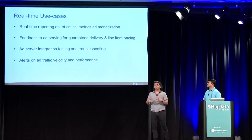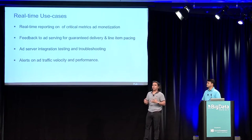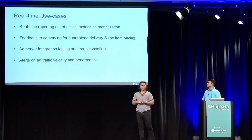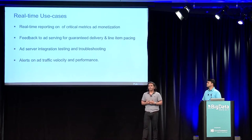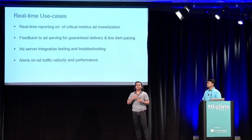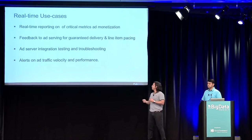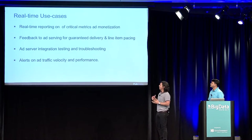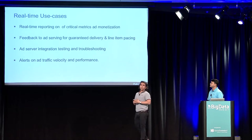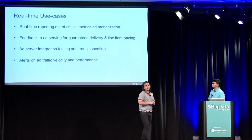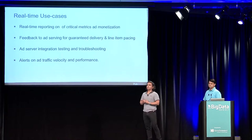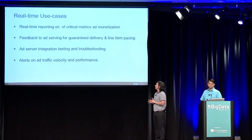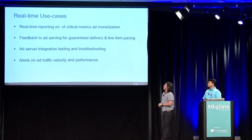We also have a bunch of integrations. Real-time reporting is a quick win when testing a new integration — as soon as we make it live, we can see impressions appearing on our dashboards within a minute, which lets us catch and troubleshoot issues immediately and take action. We also have alerts on traffic velocity and revenue. If we see a sudden drop in real time, it's a good signal to immediately investigate whether there's an issue with a server or other systems not performing as expected. These are our real-time use cases.